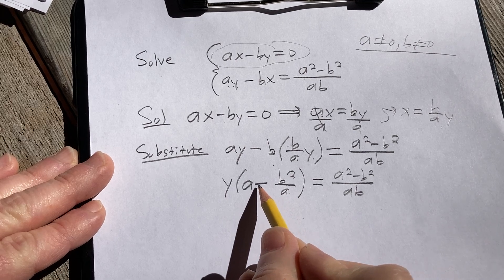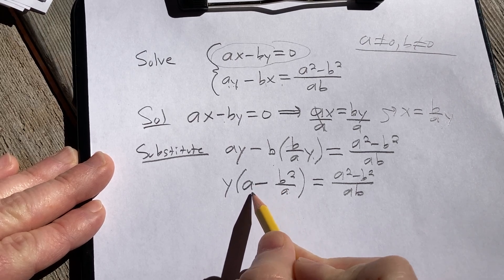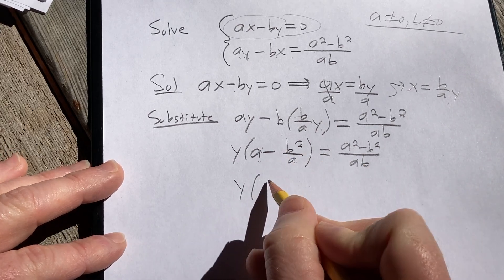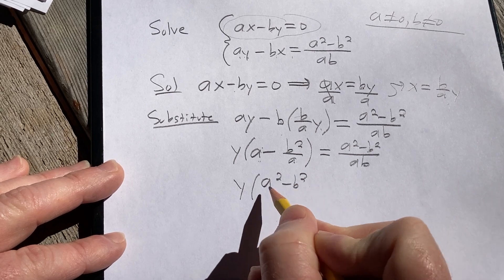We can write this as a single fraction. We can subtract these. We multiply this by a over a, and that's going to give us a squared over a, which is basically going to be a squared minus b squared over a.